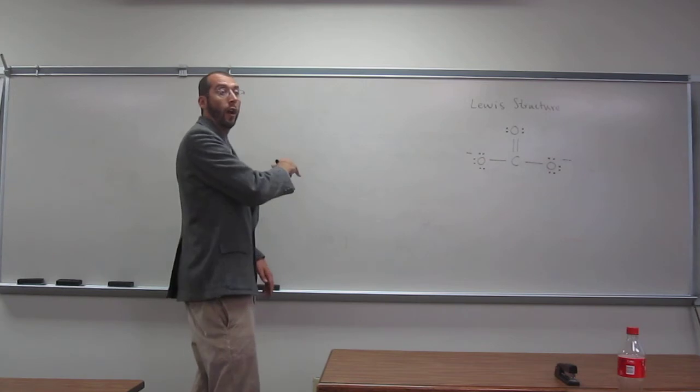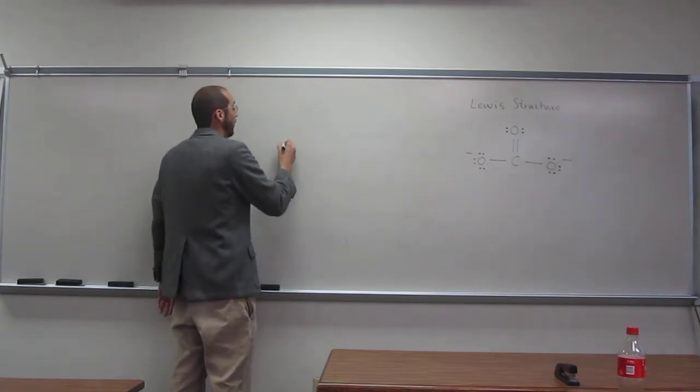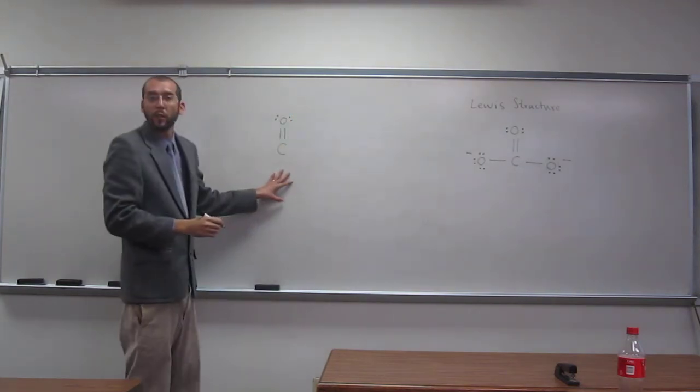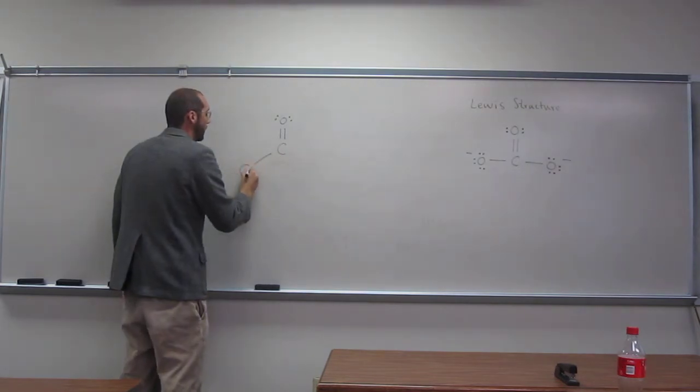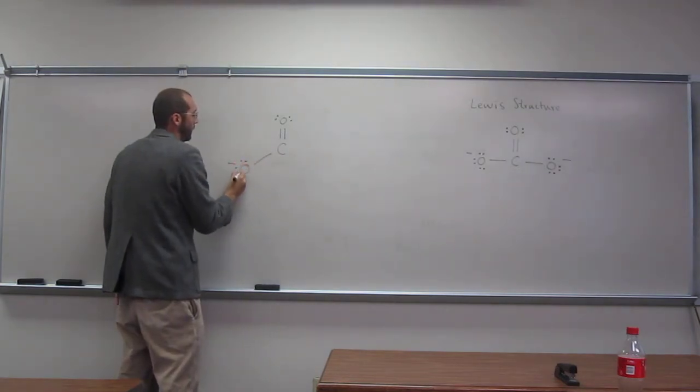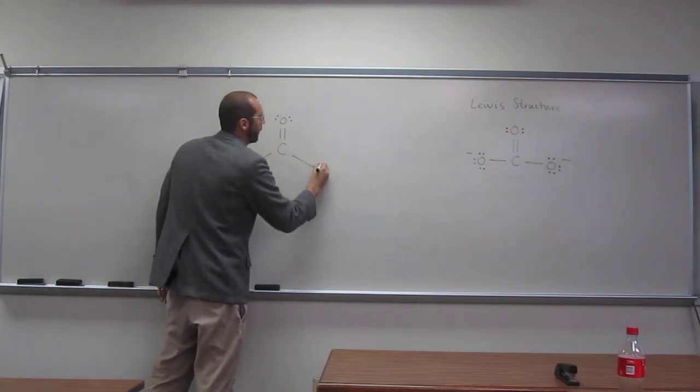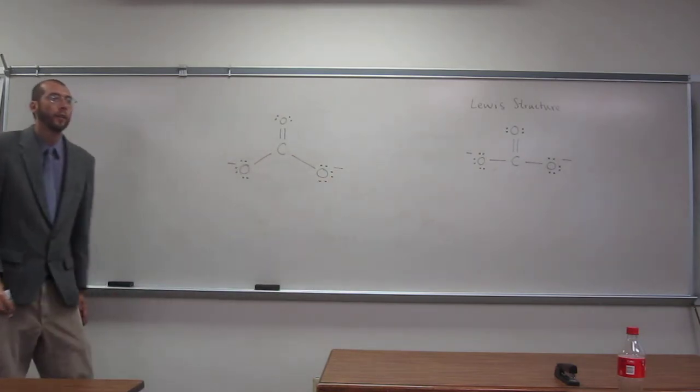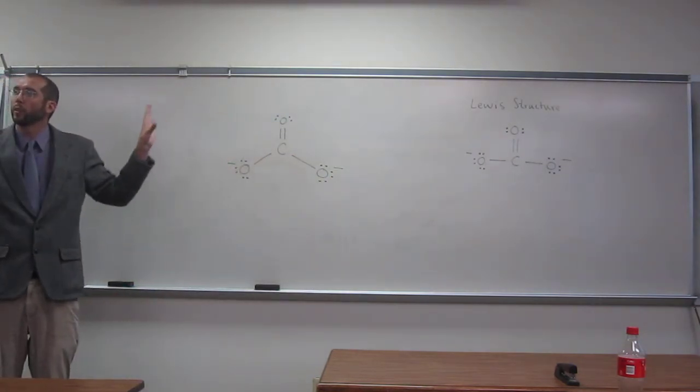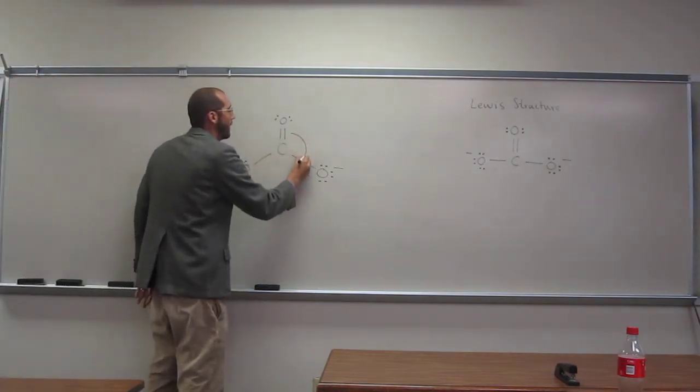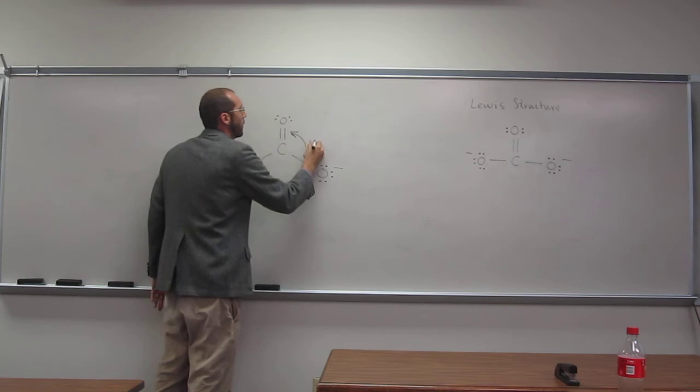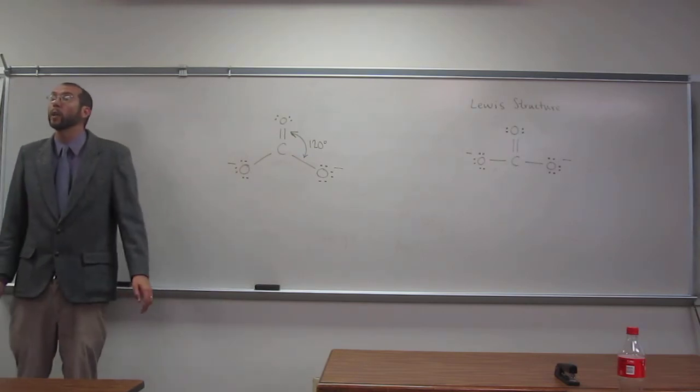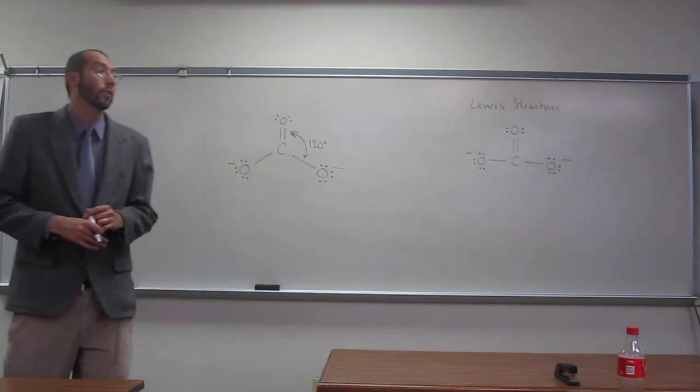Let's go ahead and draw the VSEPR structure, or the actual particle structure. That's the same, but we want to draw these kind of like a peace sign or a Mercedes symbol. You guys see the difference between the two drawings? This VSEPR drawing actually shows that bond angle being 120 degrees, which you would expect because there's three bonding regions of electron density.